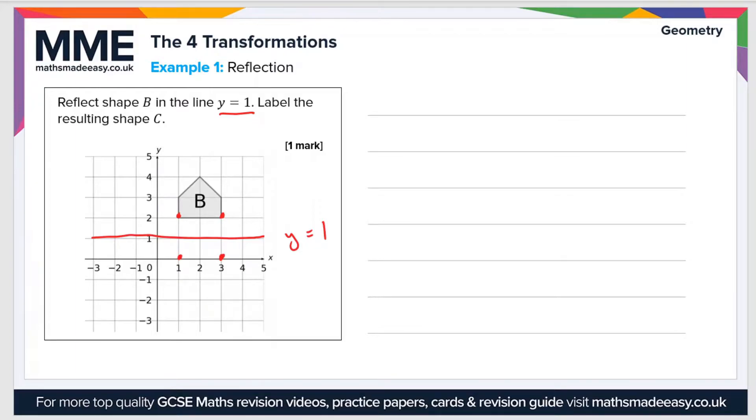And then the next two corners, we'll do these two here. These are two squares away, so they'll be two squares away from the line here. And then finally, this point is three squares away from the line, so we'll go three squares away from the line in this direction.